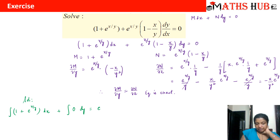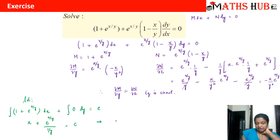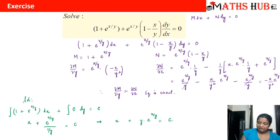Integrating: the first term ∫1 dx gives x. The second term ∫e^(x/y) dx — since we integrate with respect to x and 1/y is constant — gives y·e^(x/y). So the final answer is x + y·e^(x/y) = c.